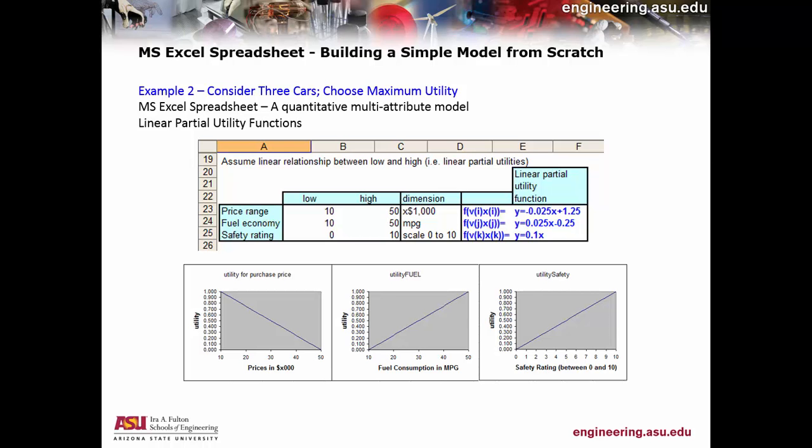You might ask: how do you define utility — isn't it arbitrary? Well, it could be, but it's not so much about being arbitrary as being consistent. If I consider thirty thousand dollars to be a good price, then fifty thousand dollars is a bad price and twenty thousand dollars is an even better price. Even though you arbitrarily pick thirty thousand as your anchor, there's consistency in the model, and that's what you want.